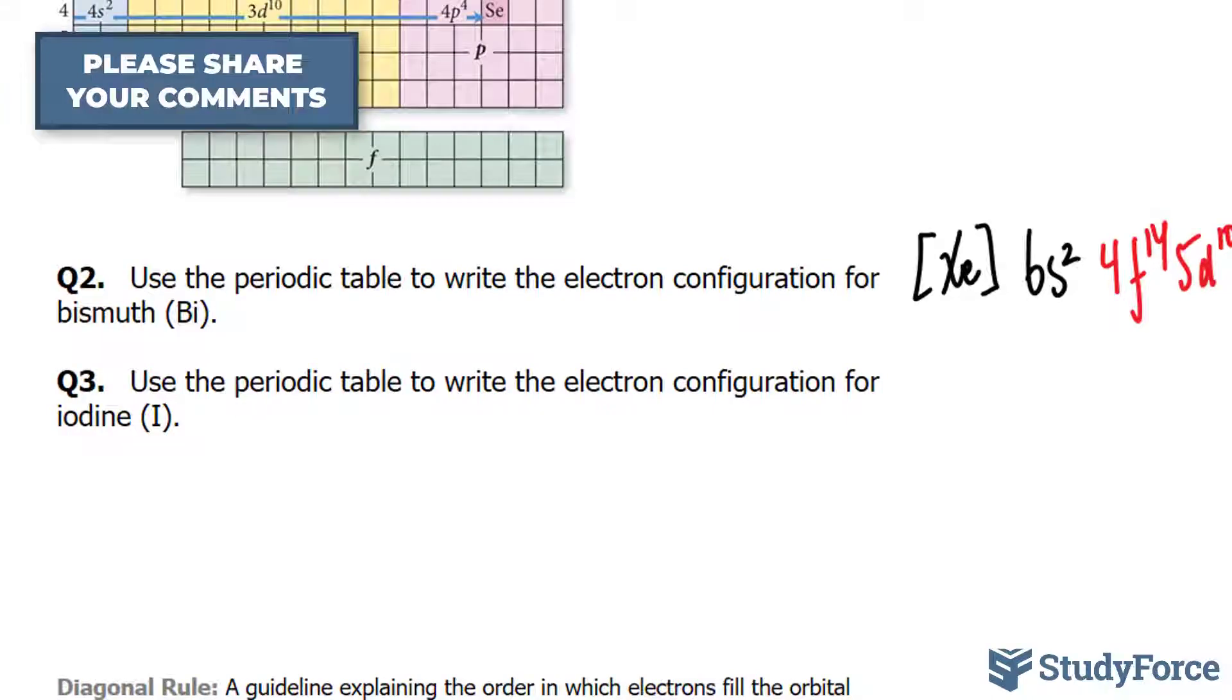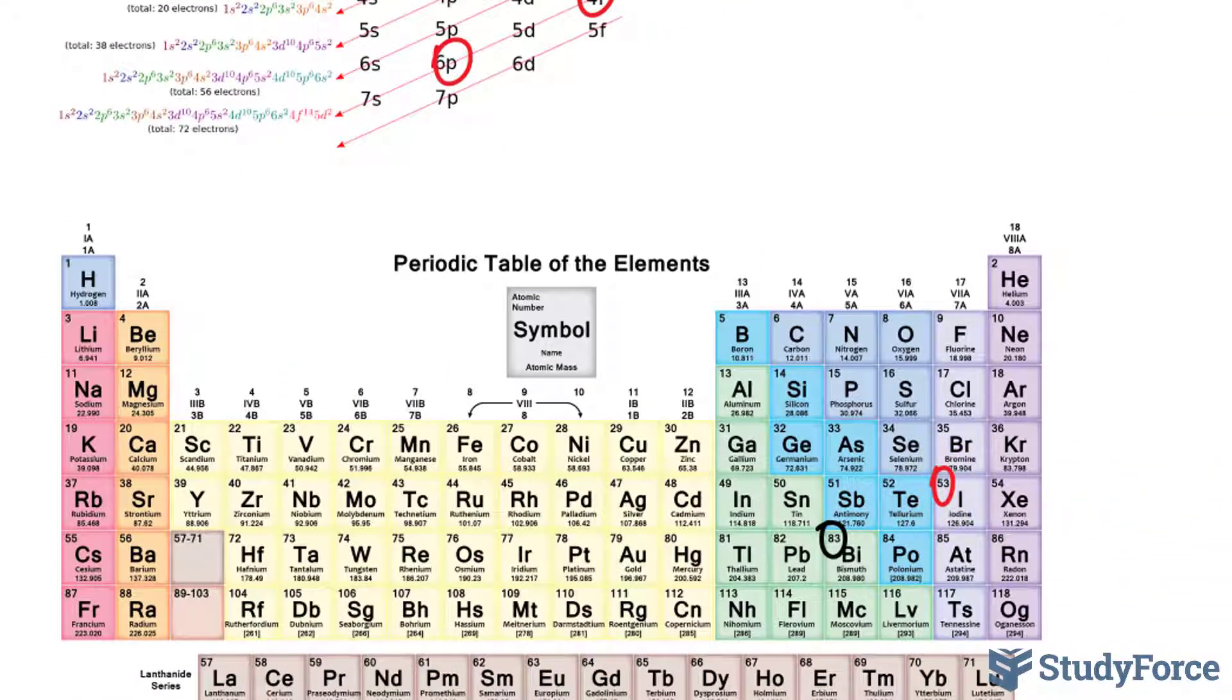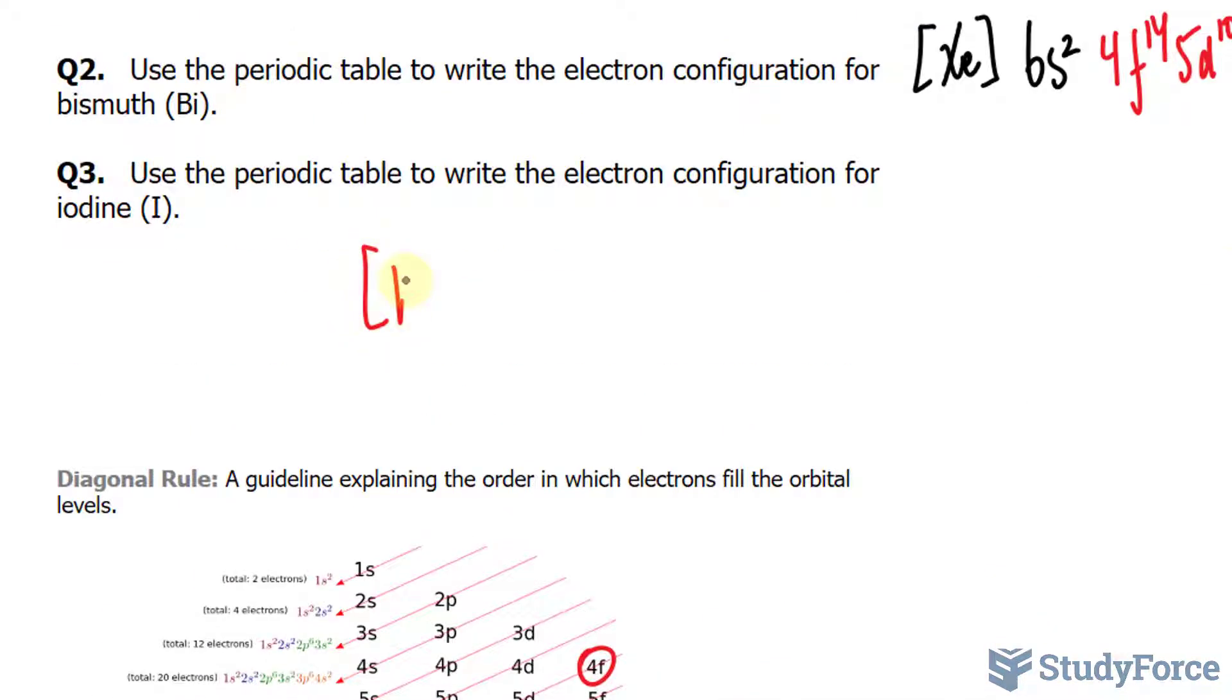Finally, we can move on to question 3. This time we're doing it for iodine. Iodine has 53 electrons. Its preceding noble gas is krypton, so we'll write down Kr.